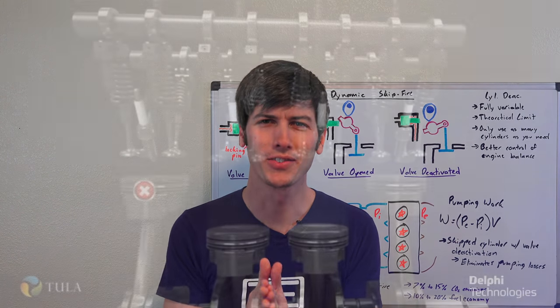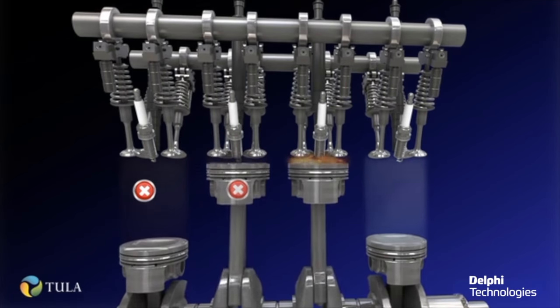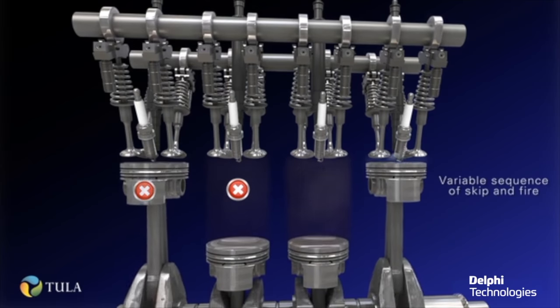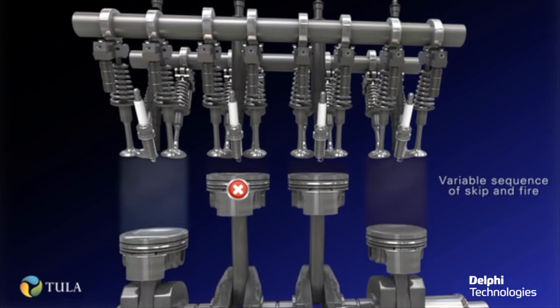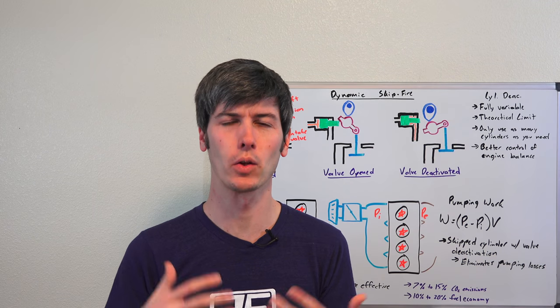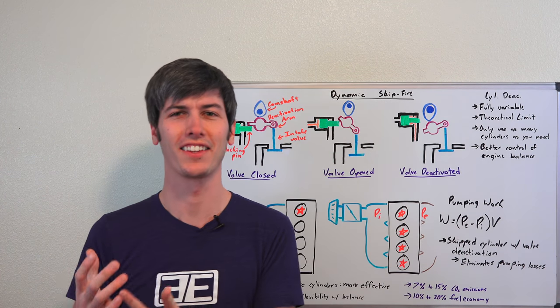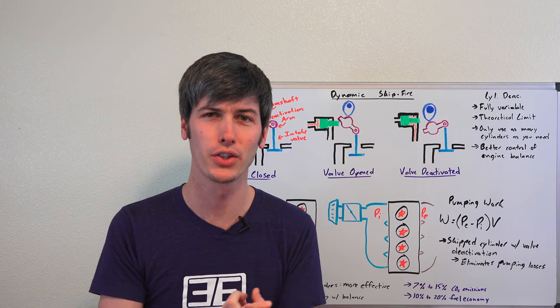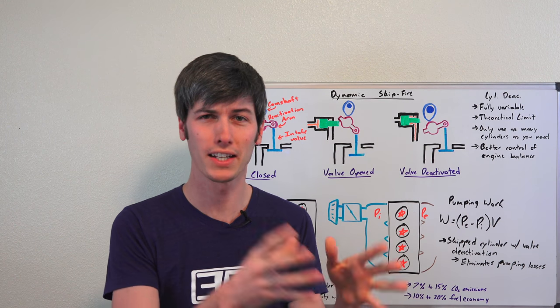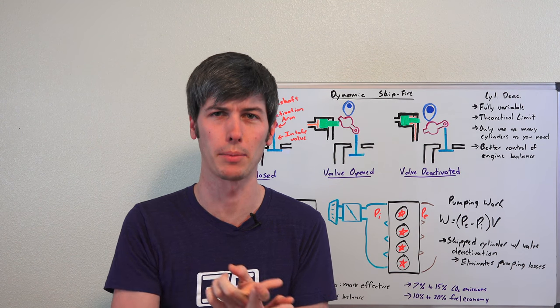Hello everyone and welcome. In this video we are talking about dynamic skip fire, which is a technology which seeks to improve the efficiency of engines. Now the interesting thing about it is the larger your engine, the more cylinders your engine has, the greater the effect that this has. Now that's not to say that smaller engines aren't more efficient. They tend to be more efficient, they tend to get better fuel economy numbers.